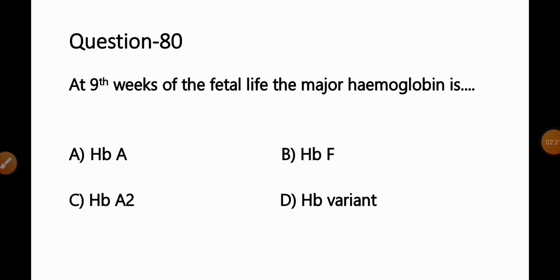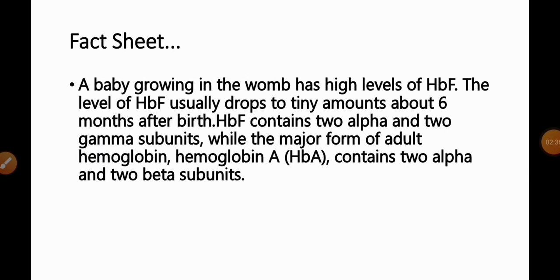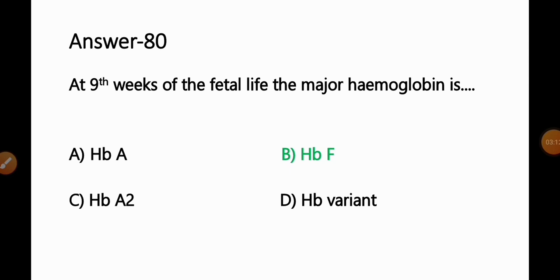Question No. 80: At the 9th week of fetal life, the major hemoglobin is — Option A: HbA; B: HbF; C: HbA2; D: Hb Variant. A baby growing in the womb has high levels of HbF (fetal hemoglobin), which drops to tiny amounts about 6 months after birth. HbF contains 2 alpha and 2 gamma subunits, whereas adult HbA contains 2 alpha and 2 beta subunits. So Option B — HbF — is the correct answer.